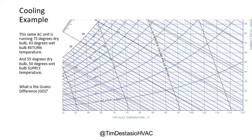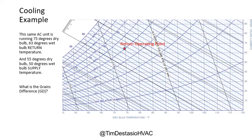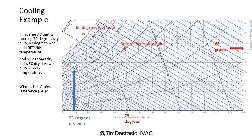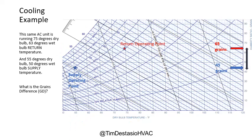The same air conditioning unit we've been discussing is running at 75°F dry bulb and 63°F wet bulb on the return. Plotting those on the psychrometric chart and carrying the operating point across to the right, we arrive at 65 grains of moisture on the return. On the supply side, we have 55°F dry bulb and 50°F wet bulb. Carrying that operating point to the right gives us 45 grains of moisture. The grains difference is 65 minus 45, which equals 20 grains — that's the value we plug into the latent heat formula.